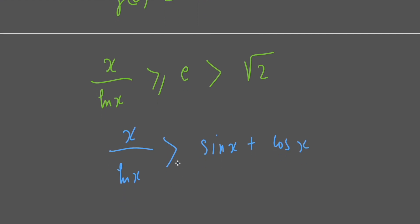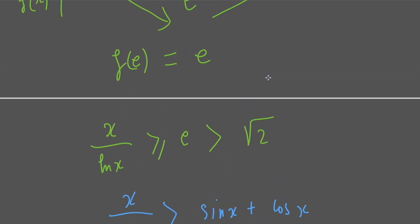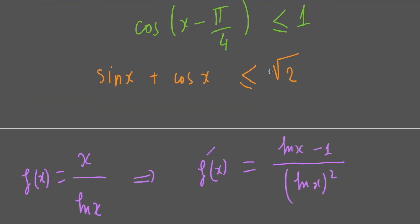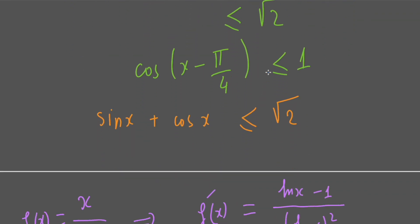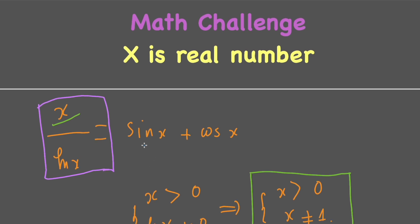The equality is impossible, so finally the answer for this problem is that we have no solution. The left-hand side is always greater than square root of 2, while the right-hand side is always smaller than or equal to square root of 2, so the equation has no root.